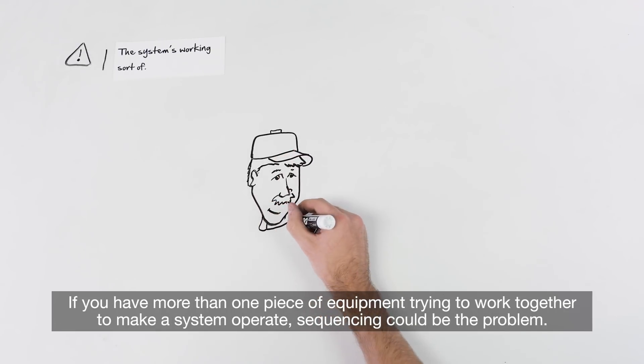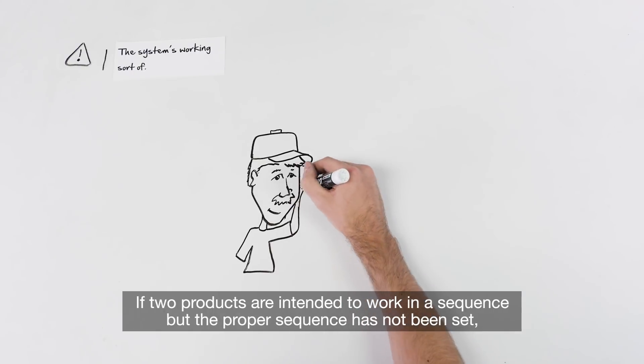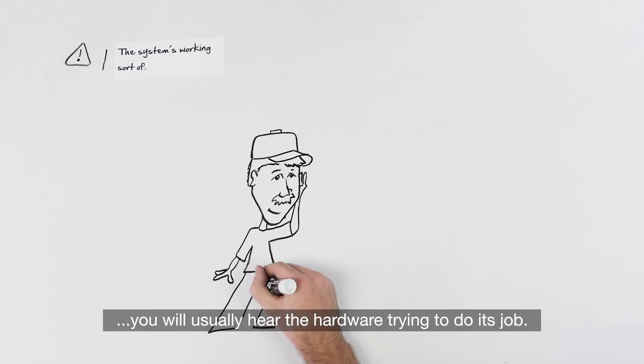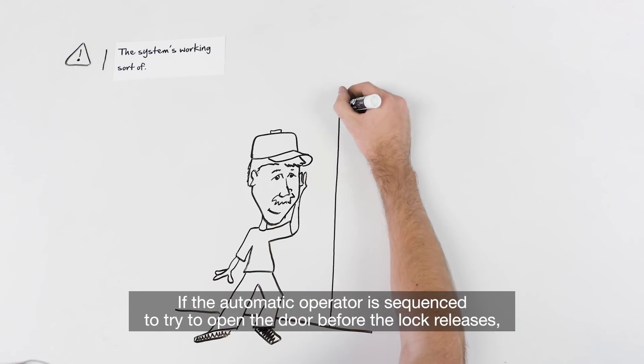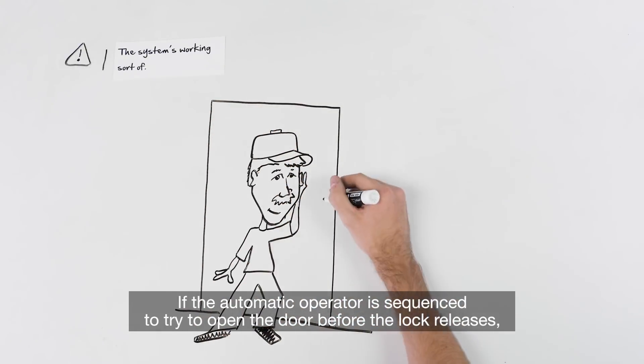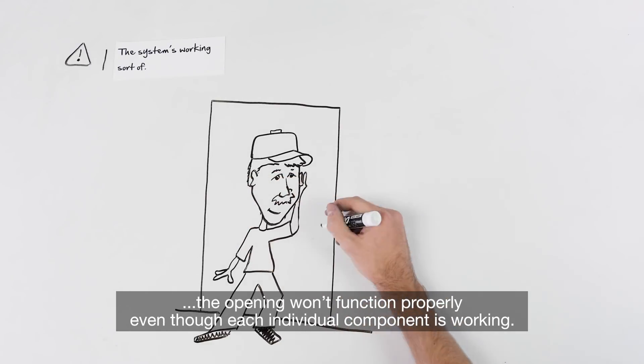If you have more than one piece of equipment trying to work together to make a system operate, sequencing could be the problem. If two products are intended to work in a sequence but the proper sequence has not been set, you will usually hear the hardware trying to do its job. For example, say you have a system with an automatic operator and a lock. If the automatic operator is sequenced to try to open the door before the lock releases, the opening won't function properly even though each individual component is working.